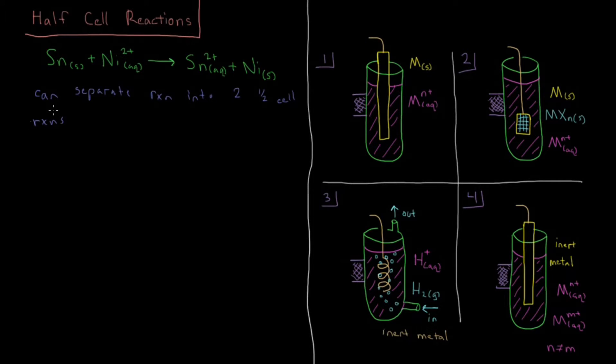So how can we do this? Well, the first one we could write down would be nickel 2+ plus two electrons yields nickel solid.